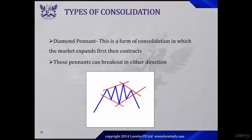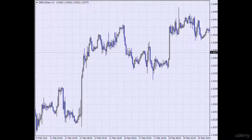Now we have the diamond pennant. This is a form of consolidation in which the market expands first and then contracts. These pennants can break out in either direction — they can break out upwards or they can break out downwards. Now I want you to pause this video and see if you can identify any diamond pennants on this chart.